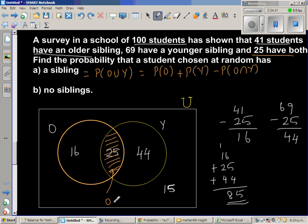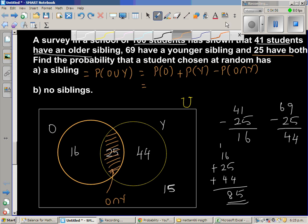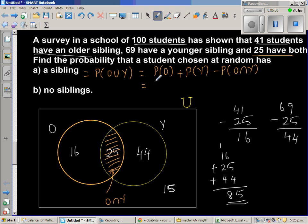So this is equal to, probability of O is, you don't need to do all the steps, but just to explain this rule I'm doing this. So probability of O is 41 out of 100.